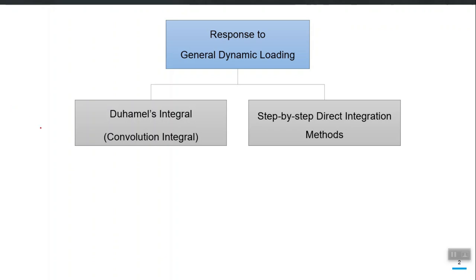We will study two methods for the response against general dynamic loading. The first is called the Duhamel's integral, also referred to in mathematics as the convolution integral. This is a classical, closed-form method. Although the resulting equation u(t) may require numerical treatment, we can at least derive the overall shape classically. The second method is numerical — an approximate method based on step-by-step direct integration.